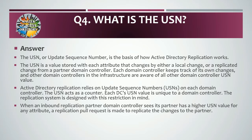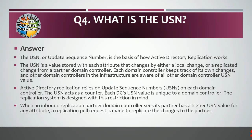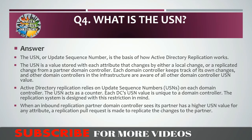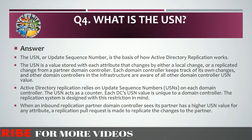Question number four: what is USN? Answer: The USN, or Update Sequence Number, is the basis of how Active Directory replication works. The USN is a value stored with each attribute that changes by either a local change or a replicated change from a partner domain controller. Each domain controller keeps track of its own changes, and other domain controllers in the infrastructure are aware of all other domain controllers' USN values.